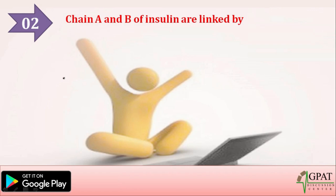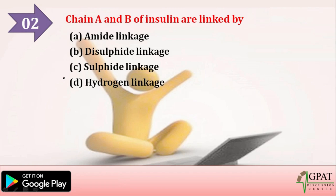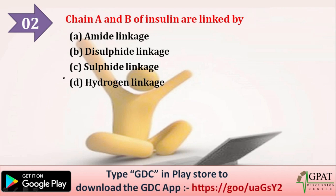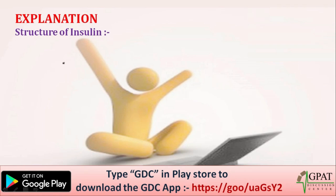Moving on to the next question: chains A and B of insulin are linked by — option A: amide linkage, option B: disulfide linkage, option C: sulfide linkage, option D: hydrogen linkage. The correct answer is disulfide linkage, which is used to link chain A and chain B of insulin.